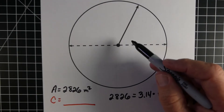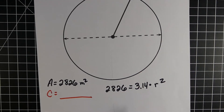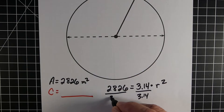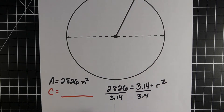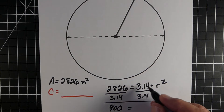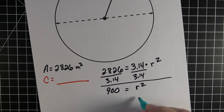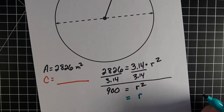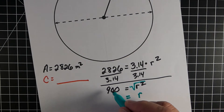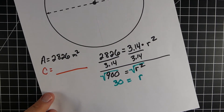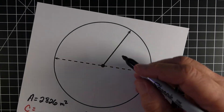Just like the other two, we cancel out pi by dividing both sides by 3.14. On the right side the 3.14s cancel, leaving radius squared. On the left side, 2826 divided by pi gives us 900. Now we go from radius squared to radius by finding the square root of both sides. The square root of 900 is 30. So our radius is 30 meters.